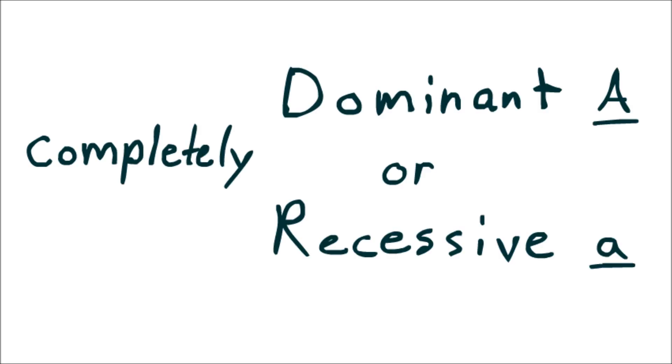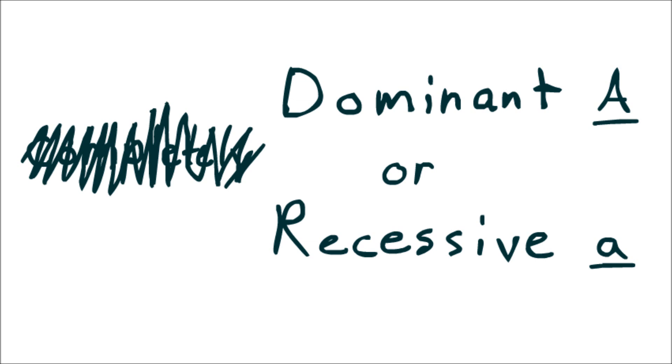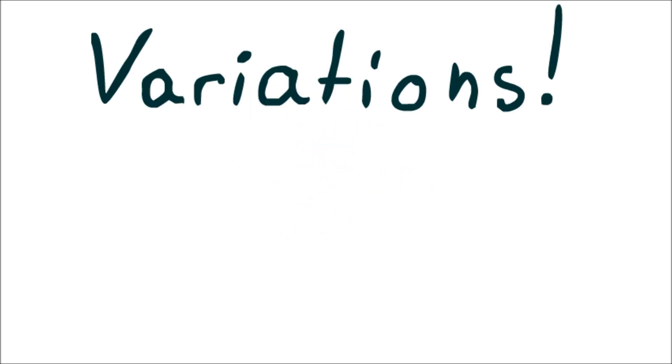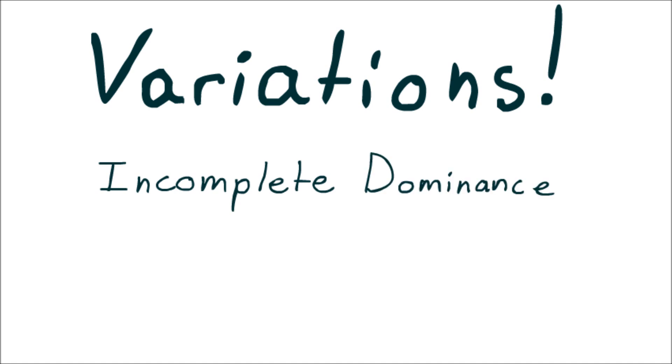Up until now, for the sake of simplicity, we've been dealing only with completely dominant or recessive alleles. But in reality, not every allele behaves that way. So now, for the first time ever, we're going to look at two variations on the pure dominant-recessive relationship, namely incomplete dominance and codominance.